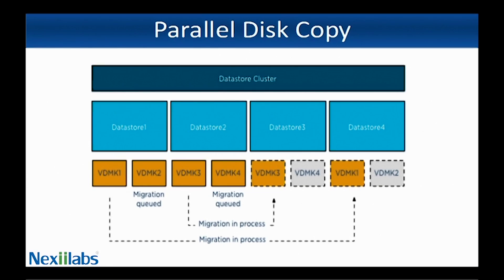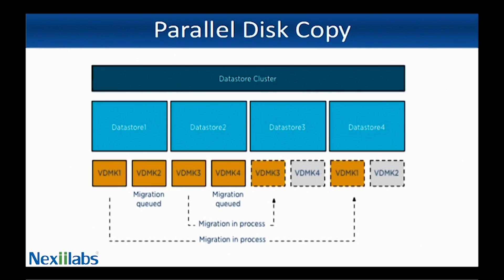Let us use an example to clarify the process. Virtual machine VM1 has 4 VMDK files: VMDK1 and VMDK2 are on Datastore 1, whereas VMDK3 and VMDK4 are on Datastore 2. The VMDK files are moved from Datastore 1 to Datastore 4 and from Datastore 2 to Datastore 3. VMDK1 and VMDK3 are migrated in parallel while VMDK2 and VMDK4 are queued. The migration of VMDK2 starts the moment VMDK1 is complete, and similarly VMDK4 starts when VMDK3 is complete.